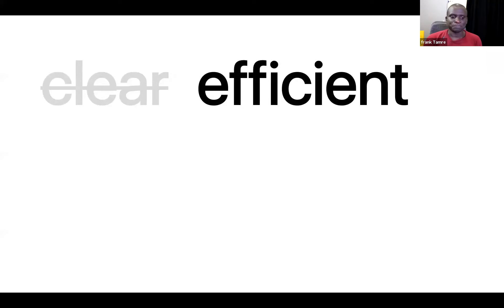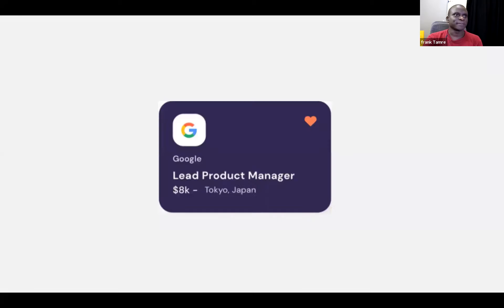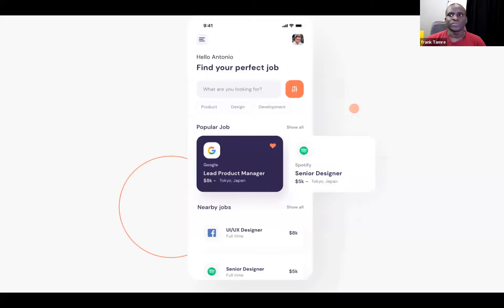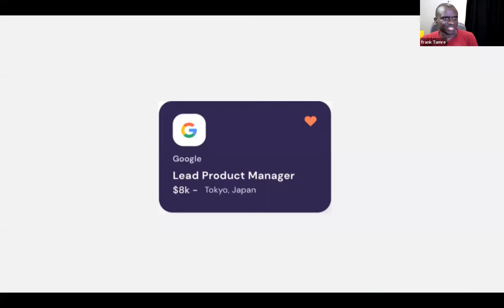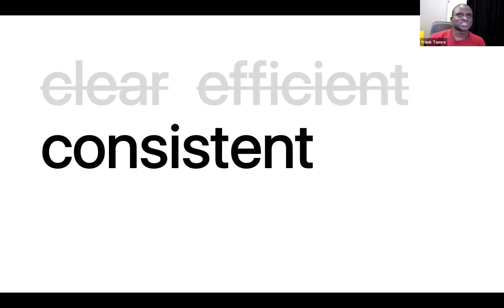The second principle is efficiency - how do you streamline and optimize people's workflow so they can anticipate needs and work better? If I'm building a card and thinking about my design system, have I put good documentation there so people can implement it? If someone comes to implement this UI, they don't need to build the card again - it's already built. The color is already there. That's efficient. The third principle is consistency - with Flutter you write code once and publish to iOS, Android, web, and desktop.